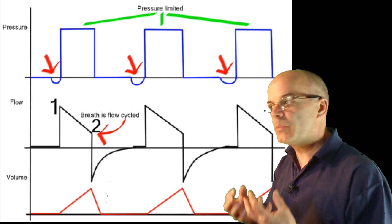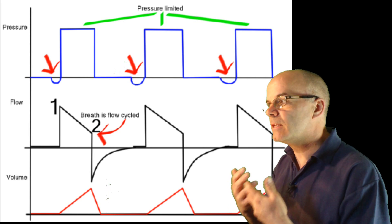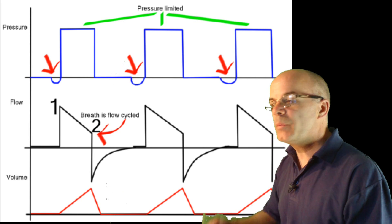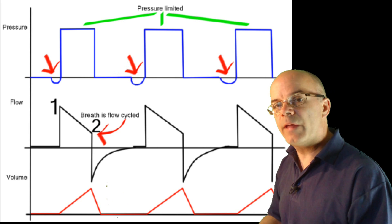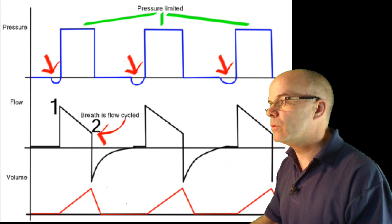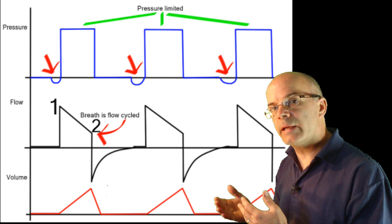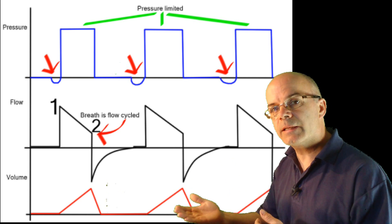So, as the patient takes a breath in, they generate an inspiratory flow, which will peak at point 1 in this diagram, and will then decline down to point 2, which is when the ventilator will cycle to the next breath.